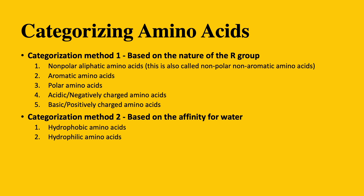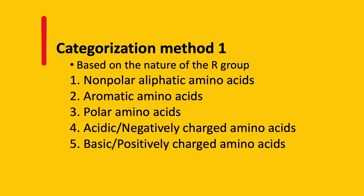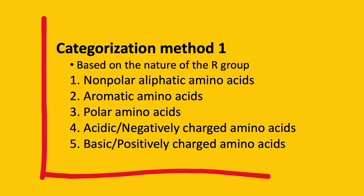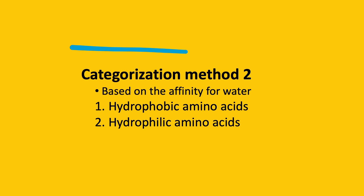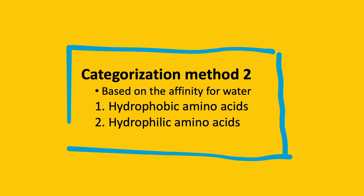These 20 proteogenic amino acids can be categorized based on two traits. As a quick rundown, these are the categorization methods. Categorization method one is based on the nature of the R groups, dividing amino acids into one of five categories: nonpolar aliphatic amino acids, aromatic amino acids, polar amino acids, acidic or negatively charged amino acids, and basic or positively charged amino acids. Categorization method two is based on the affinity for water, dividing amino acids into hydrophobic or hydrophilic.